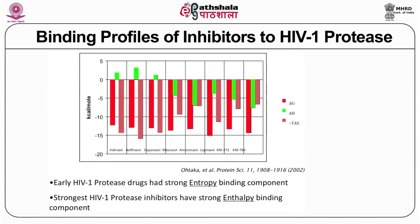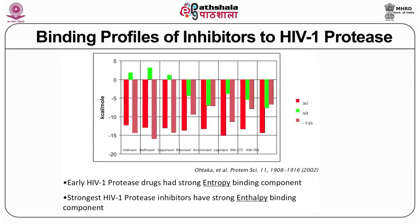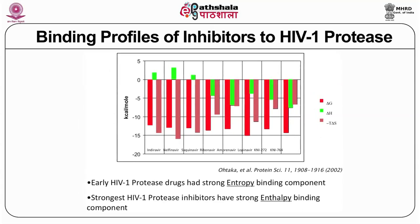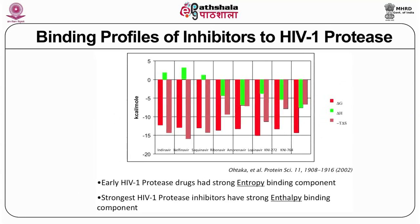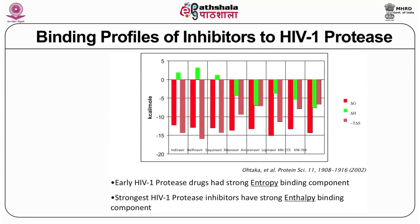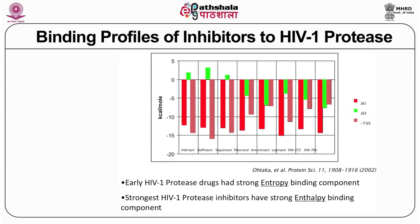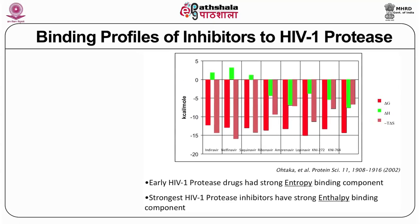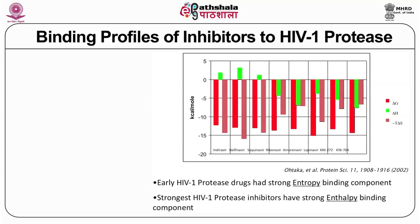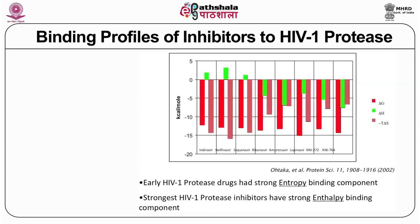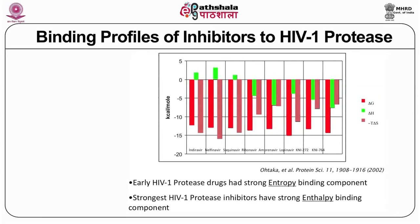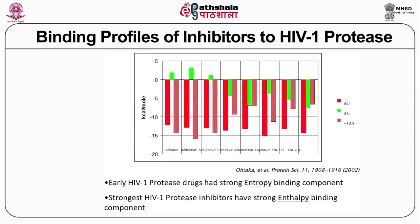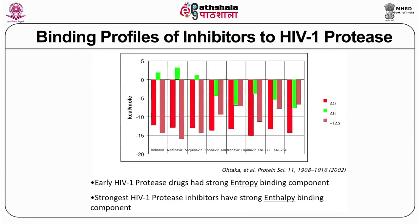Looking at the HIV-1 protease inhibitor data: delta G is negative for most reactions, so they are thermodynamically spontaneous. Delta H is positive in two cases and negative in three cases; T-delta-S from entropy is also negative. Early HIV-1 protease drugs have a strong entropy binding component, while strong HIV protease inhibitors have a strong enthalpy binding component. From this, you can identify which drugs are early-generation or strong-generation HIV protease inhibitors.